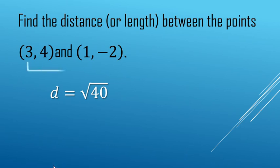One more time real quick. 3 to 1 makes 2. 2 squared is 4. 4 to negative 2 is 6. 6 squared is 36. So we add 4 plus 36 to get the square root of 40.